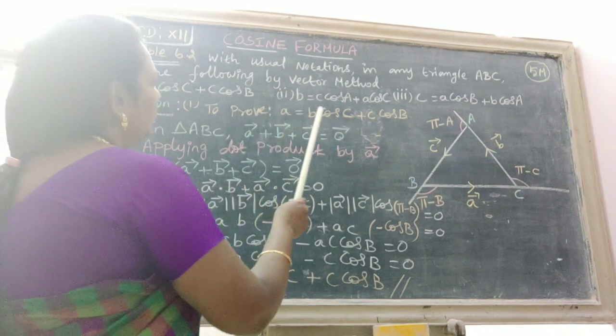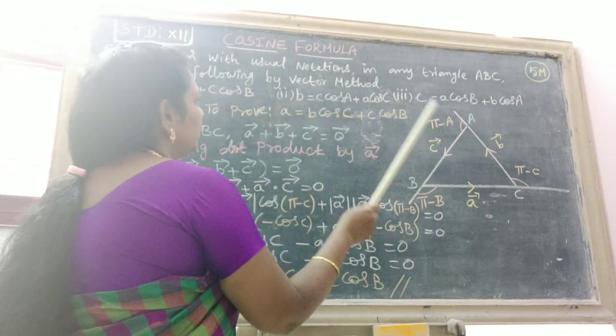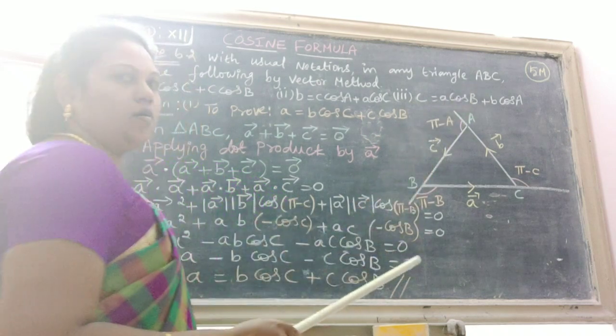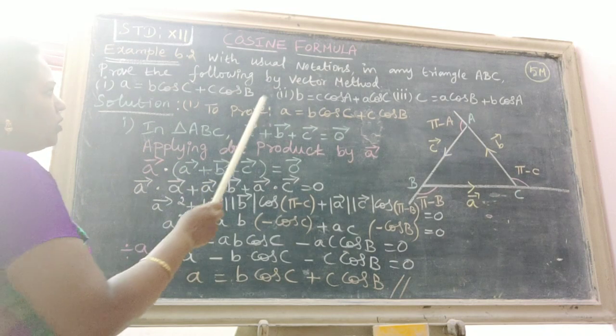Second: B equals C cos A plus A cos C. Third: C equals A cos B plus B cos A. The solution is to prove the first one.